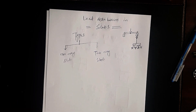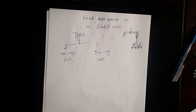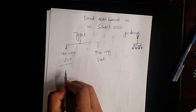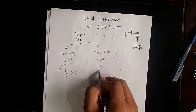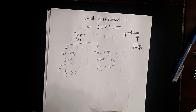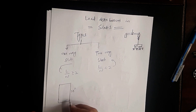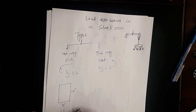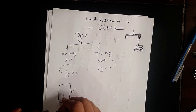Both these slabs transfer load through different mechanisms. To differentiate between types of slabs, you need to know the length-to-width ratio. If the length-to-width ratio is greater than or equal to 2, it is a one-way slab. For example, if a slab has a length of 10 feet and a width of 4 feet, then 10 divided by 4 equals 2.5, which is greater than 2, so this is a one-way slab.